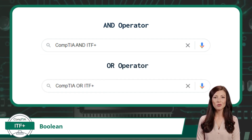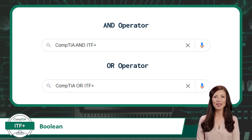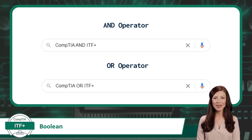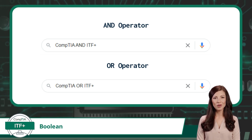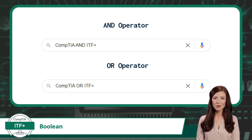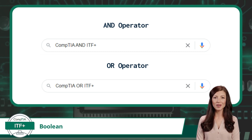My next search will utilize the OR operator. This example will search for the word CompTIA or the word ITF+. By using the OR operator between these two words, Google will return results containing at least one search word or the other, but will not require both words to be present in the resource. Additionally, to exclude a specific word from a search result, just place a subtraction symbol or minus sign in front of the word — then any resource containing that word will be omitted from your results.